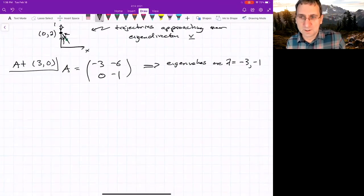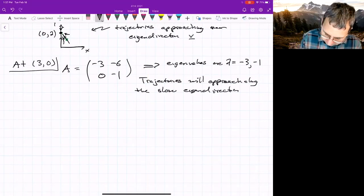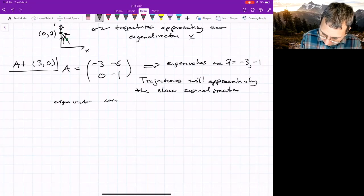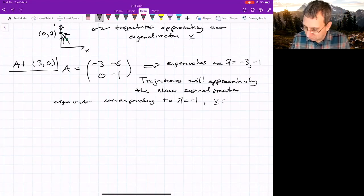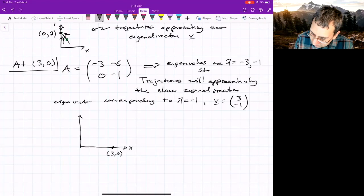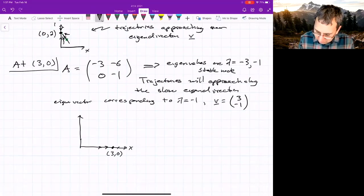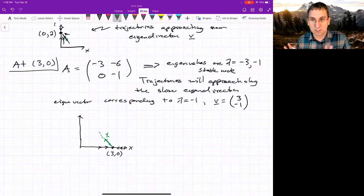And we could look at the corresponding directions. Trajectories will seem to be approaching along the slow eigen direction. And that would be the eigenvector corresponding to lambda equals -1. And that direction is (3,-1). So our little sketch, what's going on, x, y. This is our point (3,0). Well, since both of these eigenvalues are negative, we could already say this is a stable node. Again, the fast direction is going to have to be along the x-axis. And so the slow direction is given by the eigen direction, the span of this vector v. Okay. So this is just the local picture.